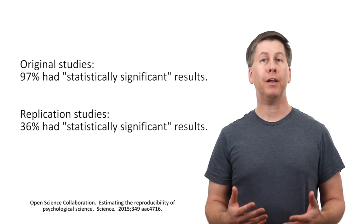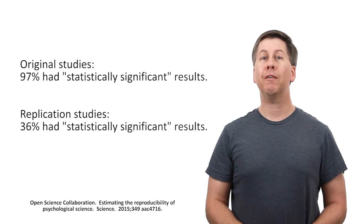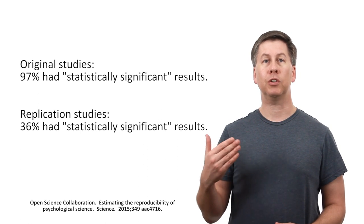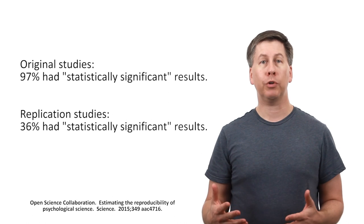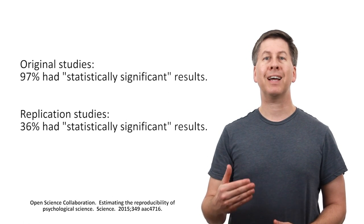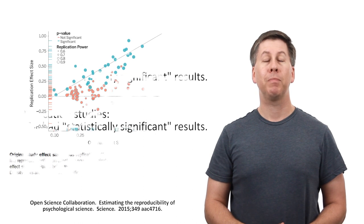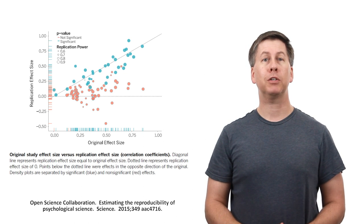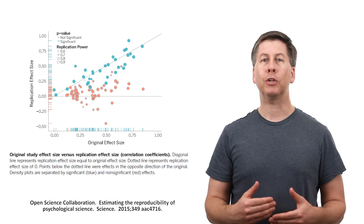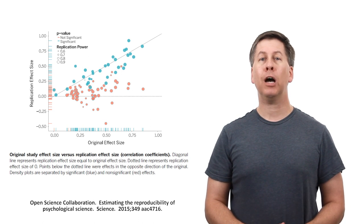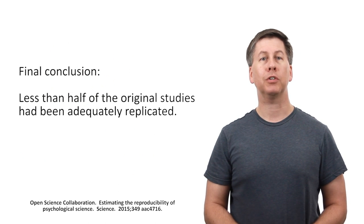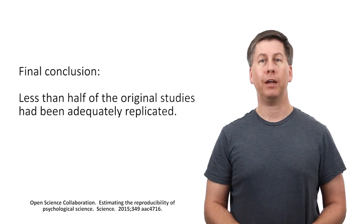Now, as I'll talk about in a few minutes, the p-value of 0.05 as the cutoff for a so-called significant result is completely arbitrary, so the reproducibility project looked further at the size of the measured effects. In summary, the effect sizes measured in the replication studies were about half that in the original studies. And using a combination of statistical analyses, the project determined that less than half of the studied results have been adequately replicated.